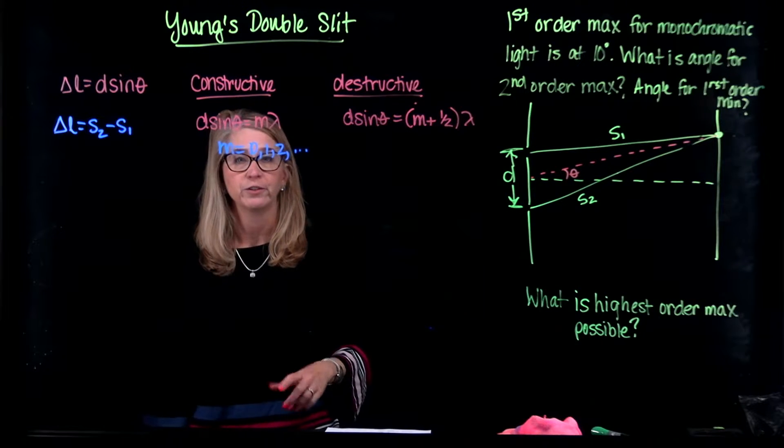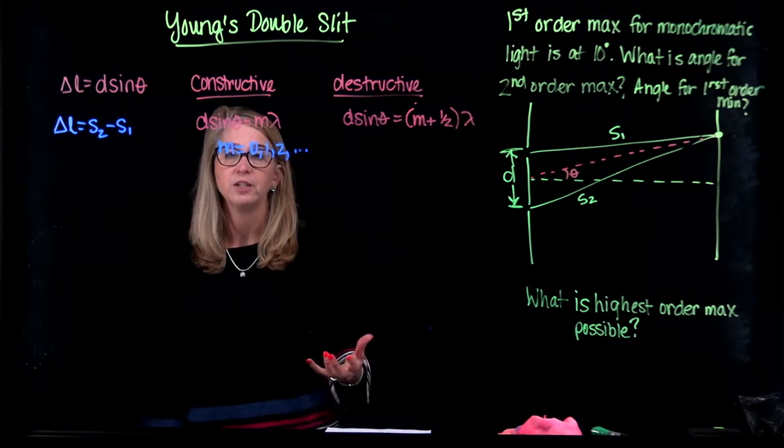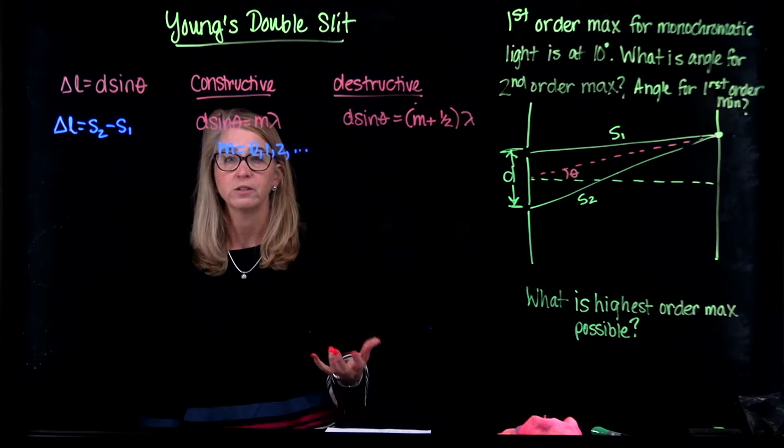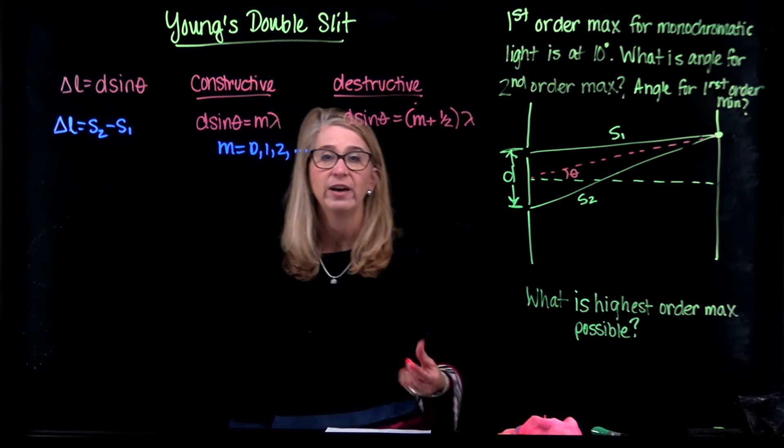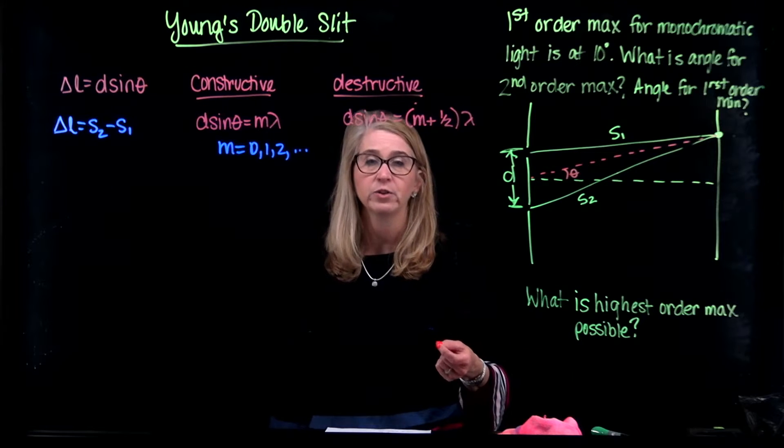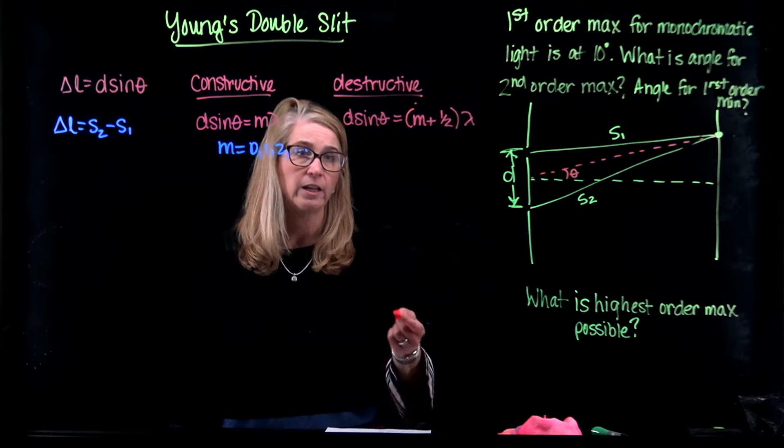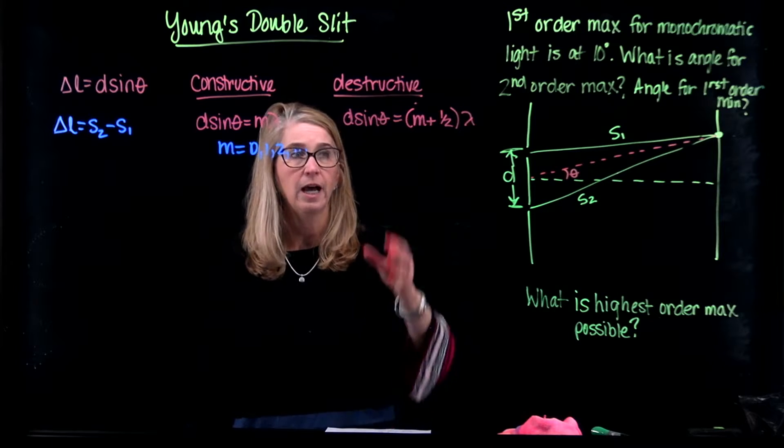The destructive interference, of course, the condition for destructive interference is different. The difference in the path length now has to be like a half a wavelength, three halves a wavelength, five halves a wavelength, something like that.